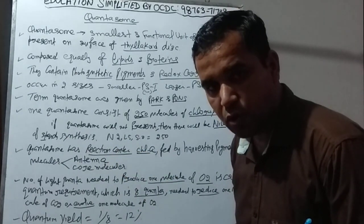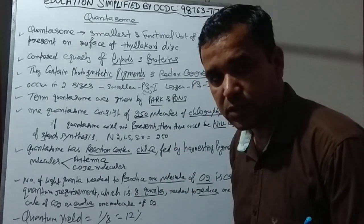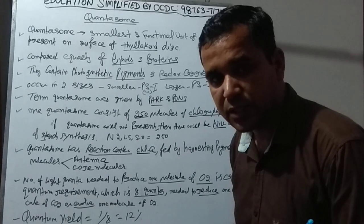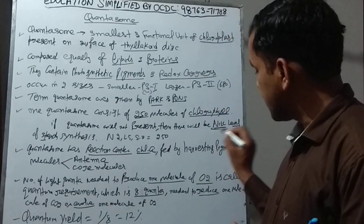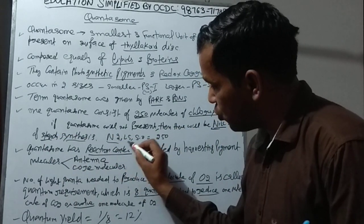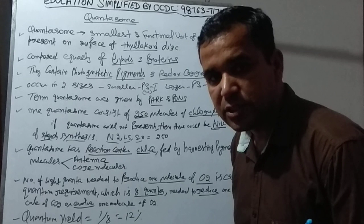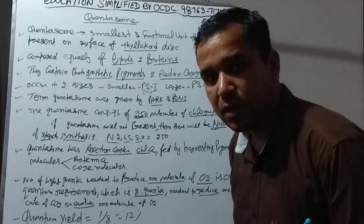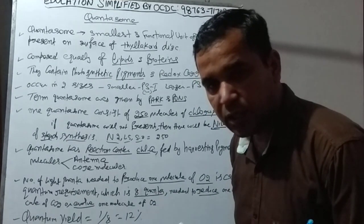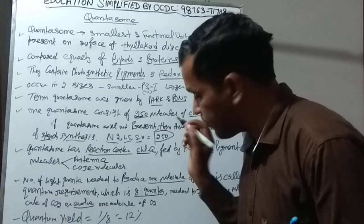If quantasome is not present in sufficient amount, there will be nil level starch synthesis — because the first visible product of photosynthesis in plants is starch. So we remember: 'nil level starch synthesis' (NLS). In our coding system: N has code 2, L has code 5, S has code 0 — giving us 250. I will provide the full alphabetical coding system in the description box.